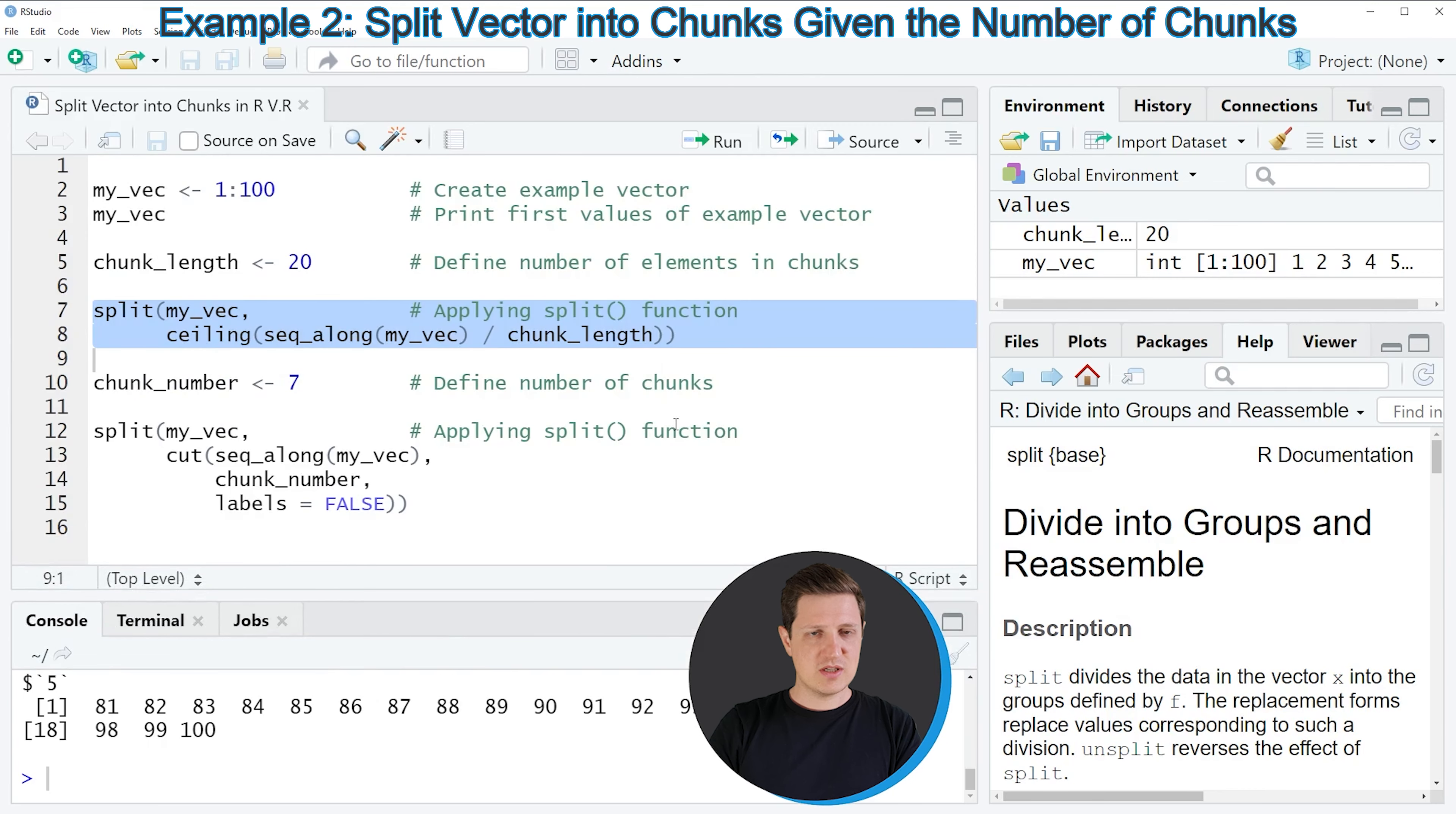In this first example, I have explained how to split our vector into chunks with a certain length. However, it is also possible to split a vector into a certain number of chunks. And this is what I'm doing in the second example of this video.